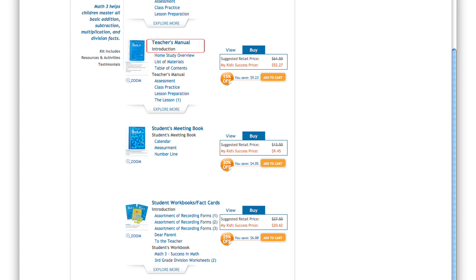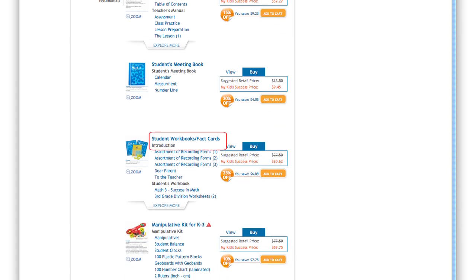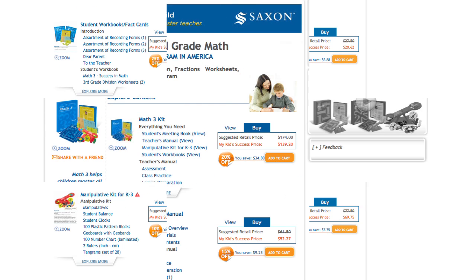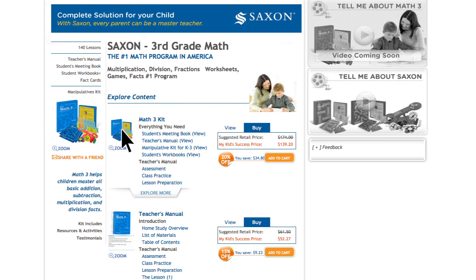Selected page views of the teacher's manual, student meeting book, student workbooks, fact cards, and manipulative kit can be viewed individually by clicking on the item name, like this, from each section.